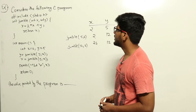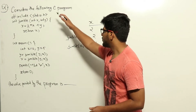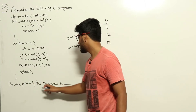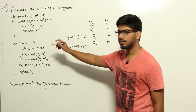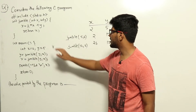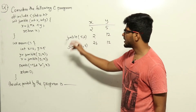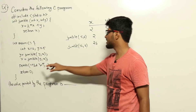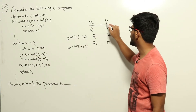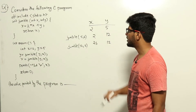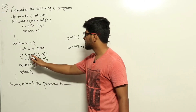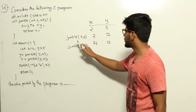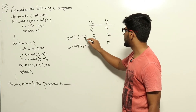This is a C programming question. We have been given a particular code snippet and are asked: what is the value printed by the program? Let us take a look. We are assigning two variables: x equals 2 and y equals 5. After that, we are calling the function jumble with y comma x, meaning we are calling jumble with 5 comma 2.